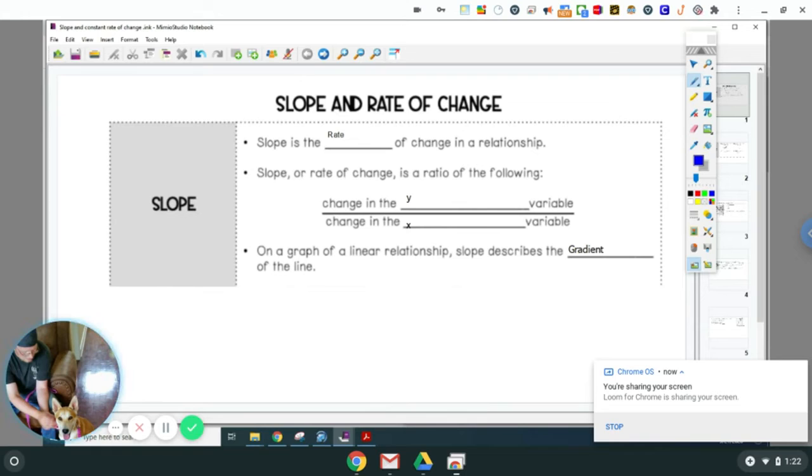In seventh grade, we call it rate of change. In eighth grade, we call it slope. I'm not sure why we have to change it, why we call it two different things when they mean the same thing. Generally you'll hear me say it with the word slope.